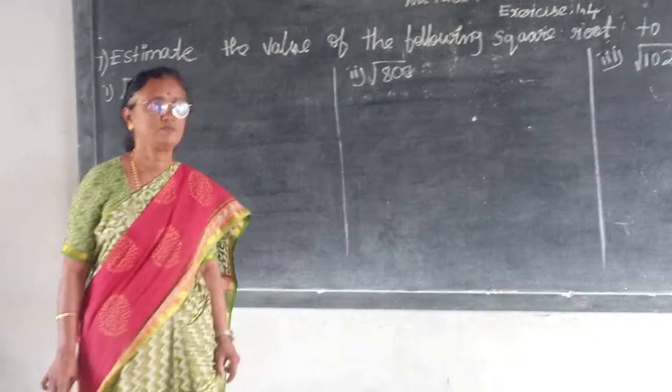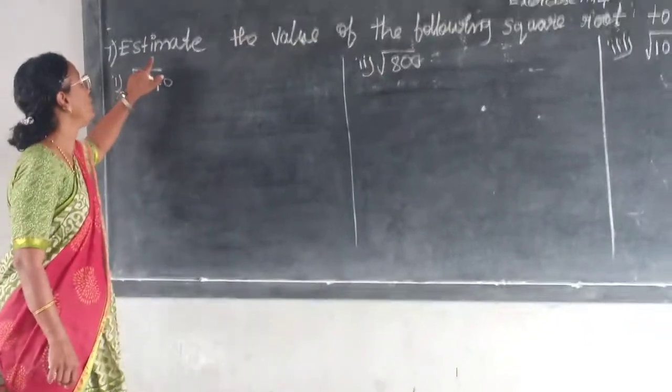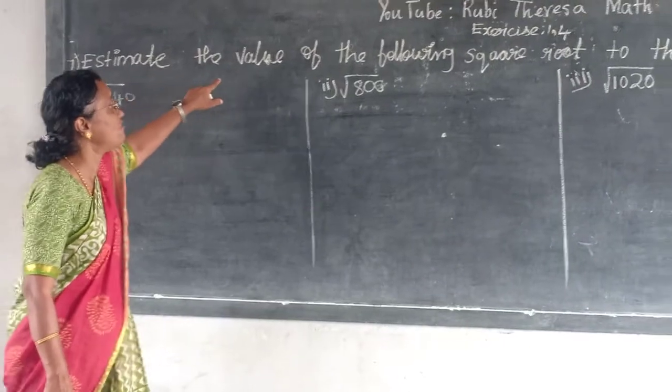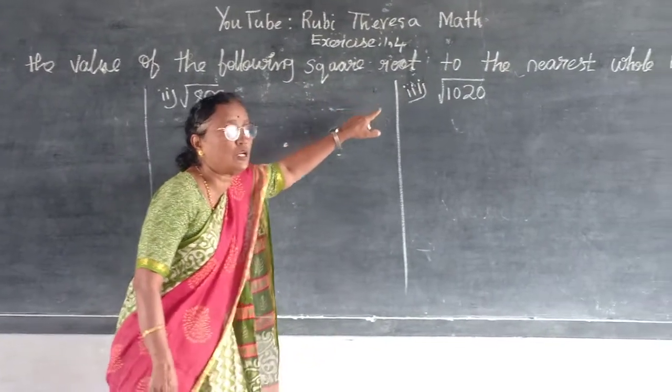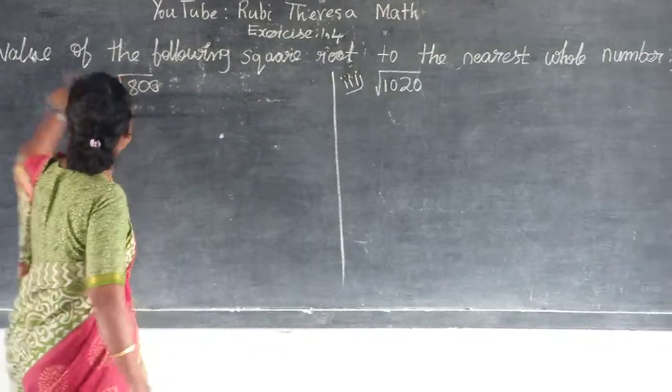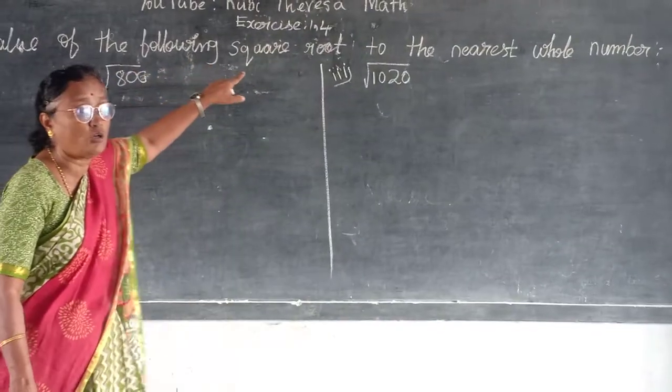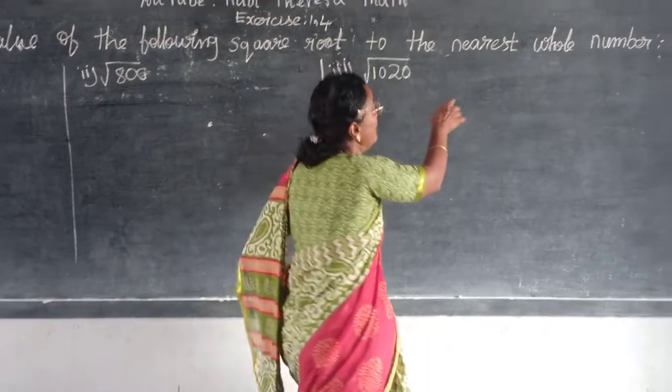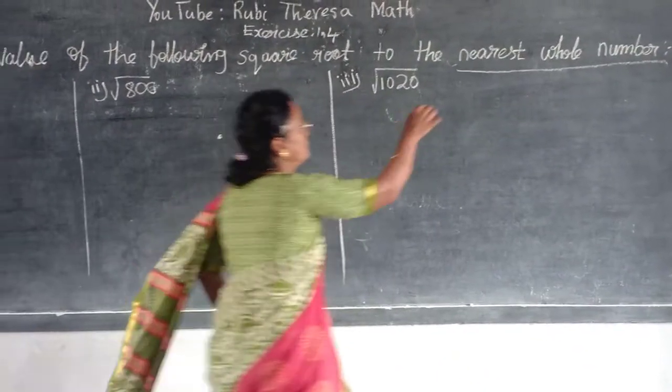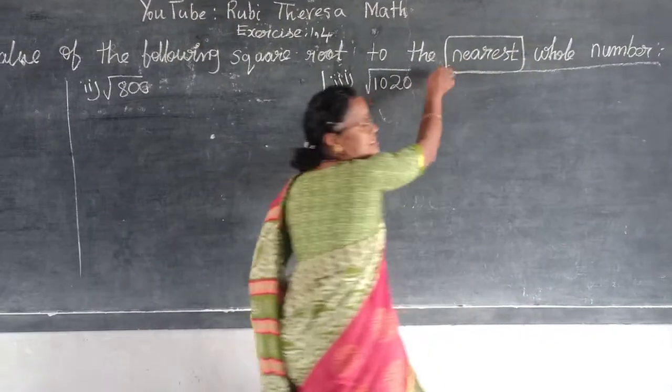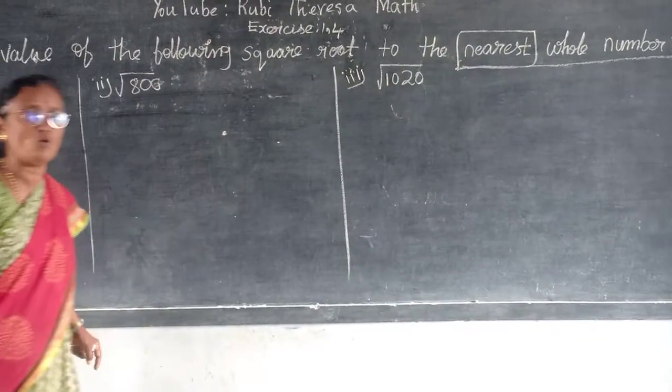Good morning, my dear. Good morning, ma'am. Read the problem. Estimate the value of the following square root. Estimate the value of the following square root to the nearest whole number. Nearest. This is the main word. Nearest whole number.